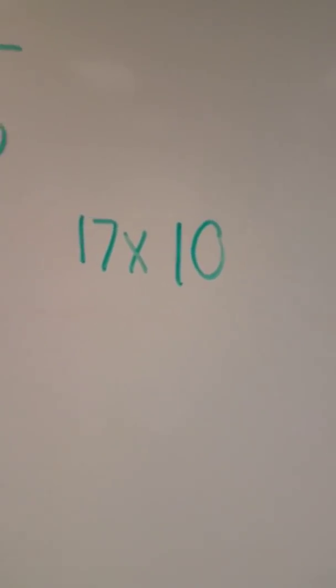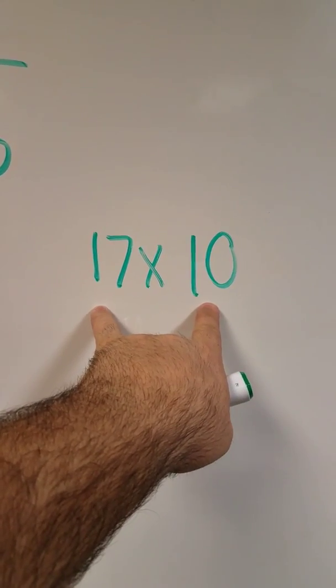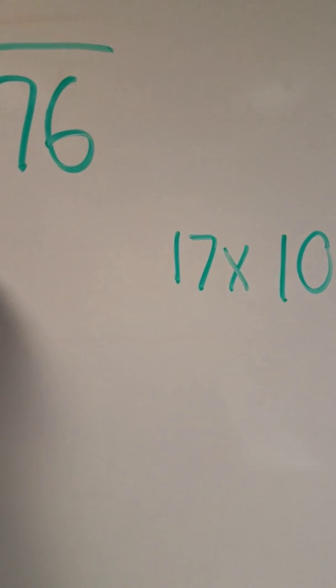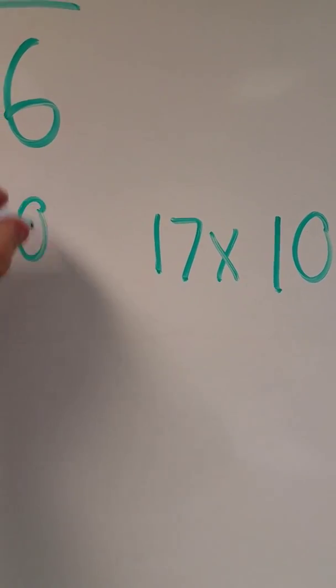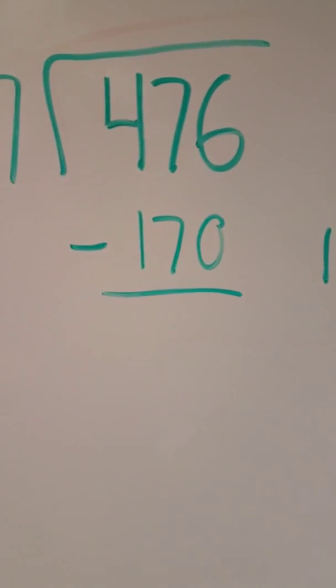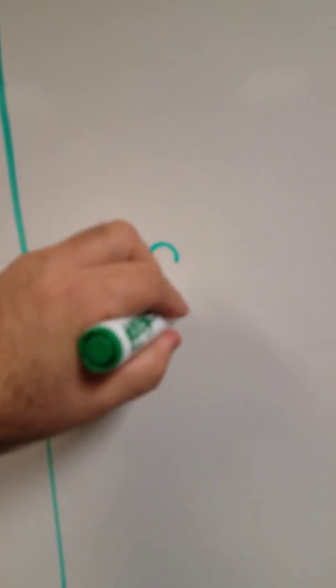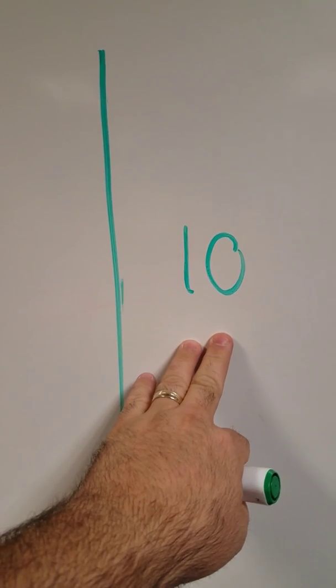17 times 10, well, we learned all you have to do is just add the zero over here. So I'm going to take 170 away from that 476. But I'm going to keep in mind, I'm going to keep a tally, a partial answer, a partial quotient of 10.